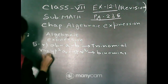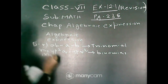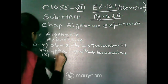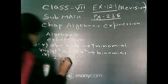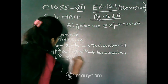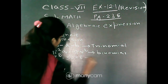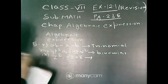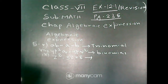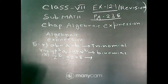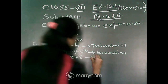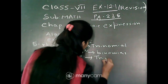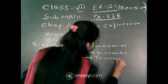Next, question number 9. Here the given algebraic expression is z square minus 3z plus 8. This algebraic expression contains 3 terms: z square, minus 3z, and plus 8, and the variable is z. So it is a trinomial.